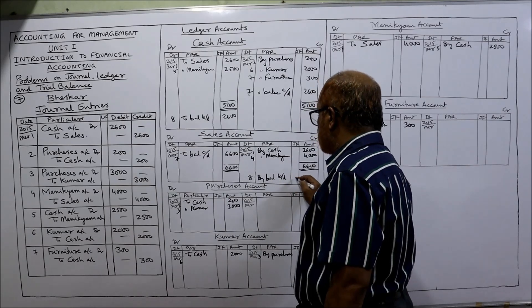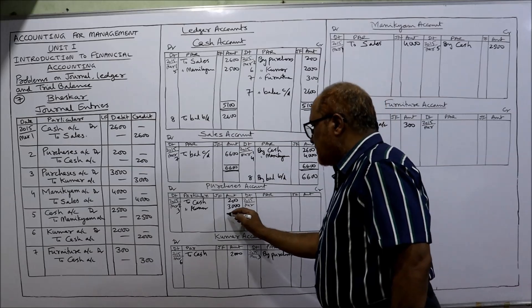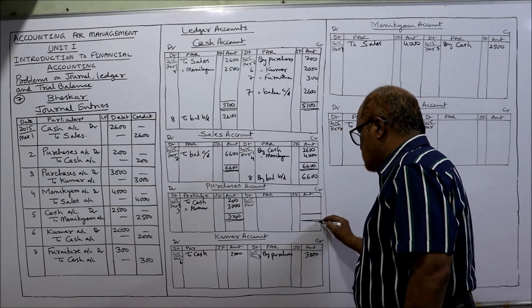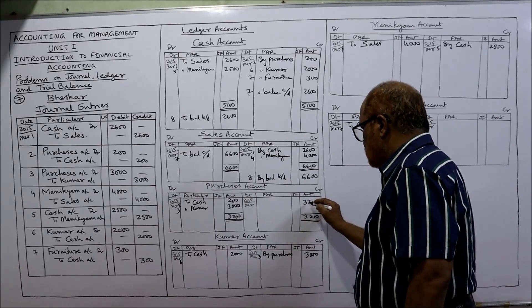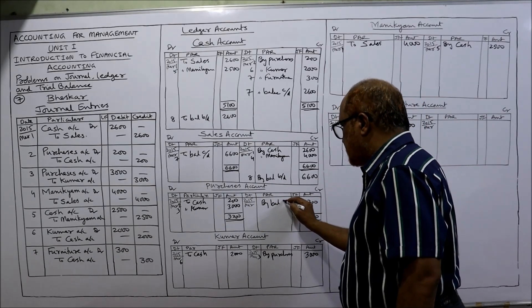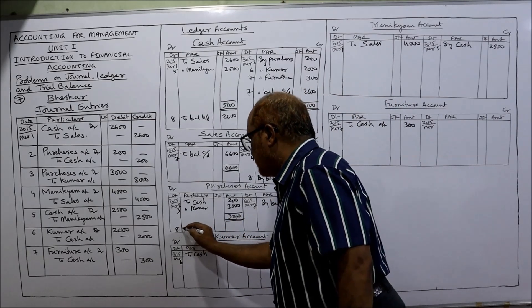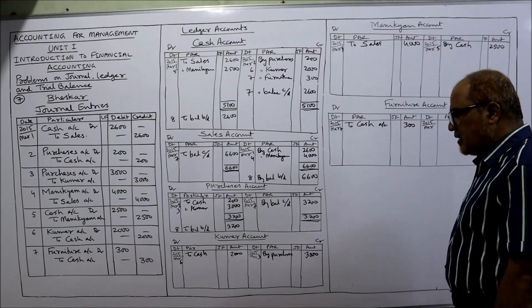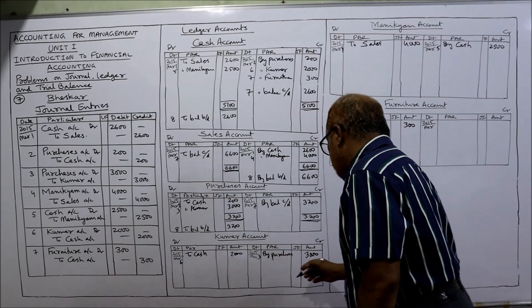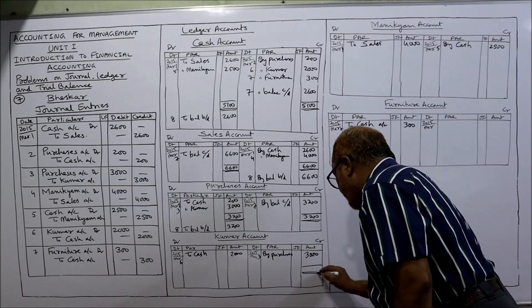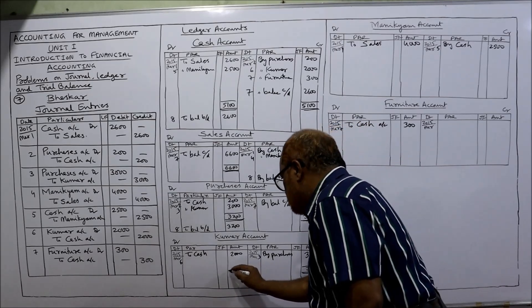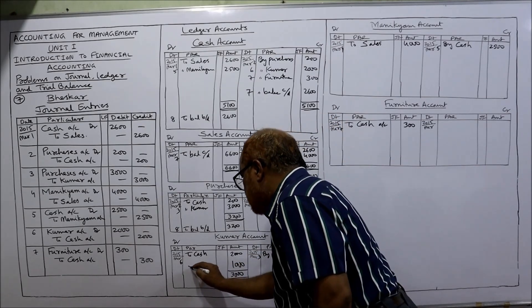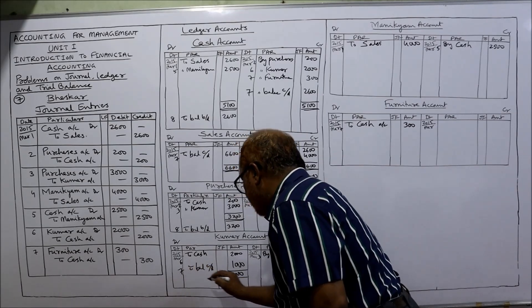Purchases account: debit side total is 3200. Take 3200 on the credit side as 'By balance carried down', date 7th. Next date 8th: 'To balance brought down — 3200.' Purchases account balanced. Kumar's account: credit side is 3000, debit side 2000 — balance is 1000. 'By balance carried down', date 7th. Next date 8th: 'To balance brought down — 1000.'